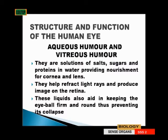There are two structures called the aqueous humour and the vitreous humour. They are solutions of salt, sugar, and protein in water, providing nourishment for the cornea and lens. They help to refract rays and produce an image on the retina. This liquid also aids in keeping the eyeball firm and round, preventing the collapse of the eye.